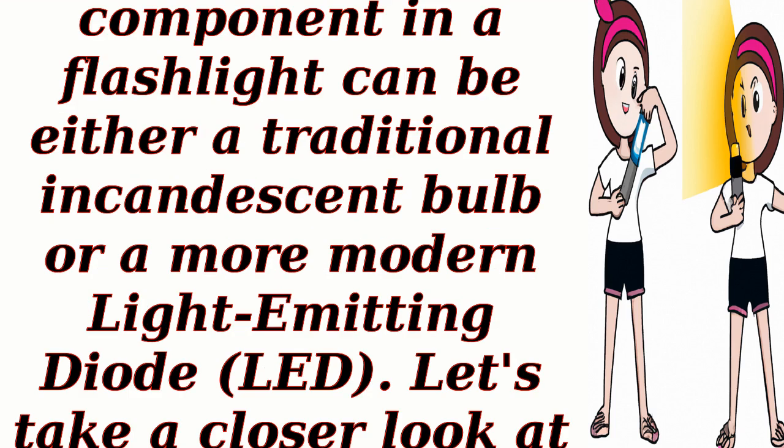Bulb or LED: the light-emitting component in a flashlight can be either a traditional incandescent bulb or a more modern light-emitting diode, LED. Let's take a closer look at both.